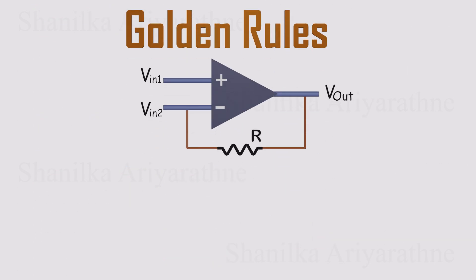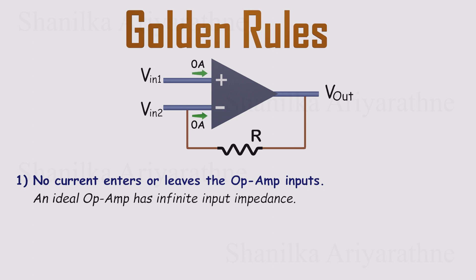Before we jump into applications, there are two golden rules for analyzing op amps with negative feedback. They come straight from the ideal op amp model and make life a lot easier. Rule one, no current flows into the input terminals. An ideal op amp has infinite input resistance.